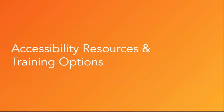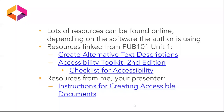Lastly, there are more resources and training options. There are tons — there is also a very long list of tools shared in the chat. There are specific resources linked from Pub 101 unit one: more guidelines for creating alt text and image descriptions, a full accessibility toolkit and checklist, and instructions for creating accessible documents that get into more step-by-step instructions for applying these best practices.